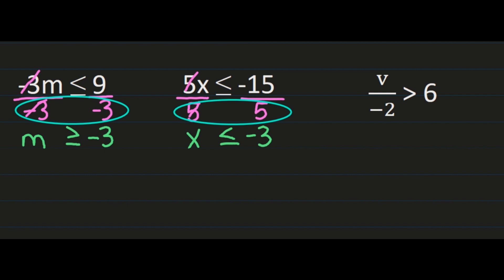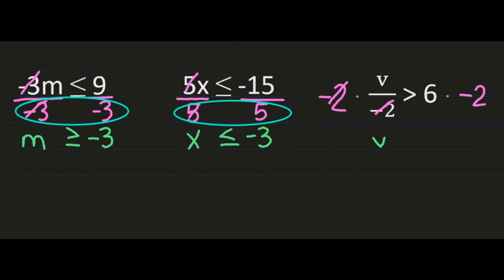Now I have v divided by negative 2 is greater than 6. Again I want to isolate my variable v, which means I'm going to multiply both sides of my equation by negative 2. On the left hand side, my negative 2s will simplify out, leaving me with just v. On the right hand side I have 6 times negative 2 — a positive times a negative is a negative, and 6 times 2 is 12, leaving me with negative 12.